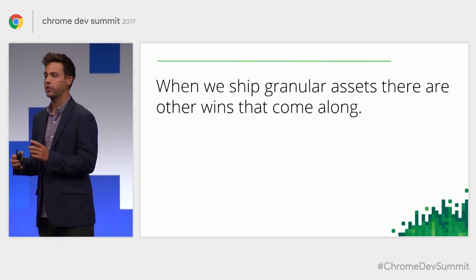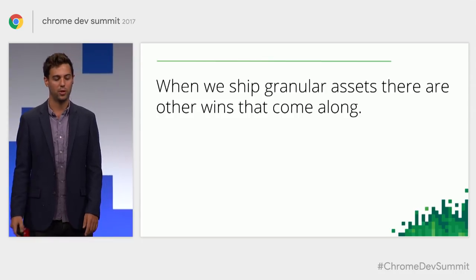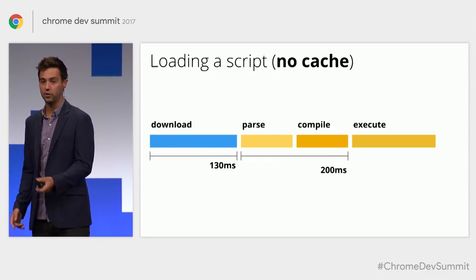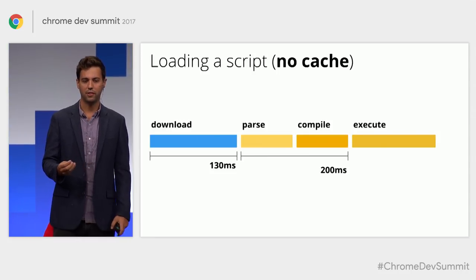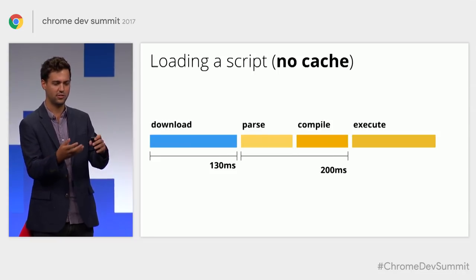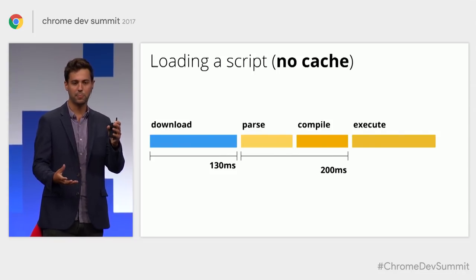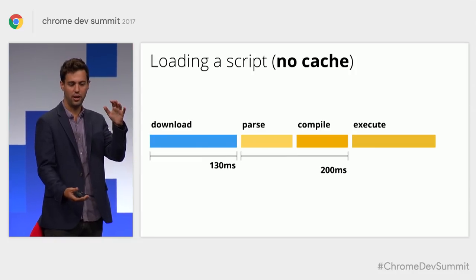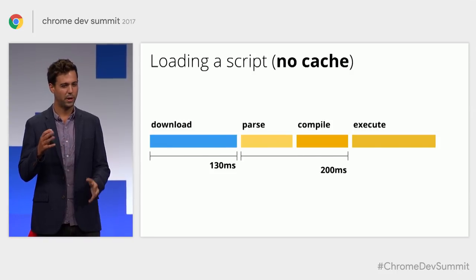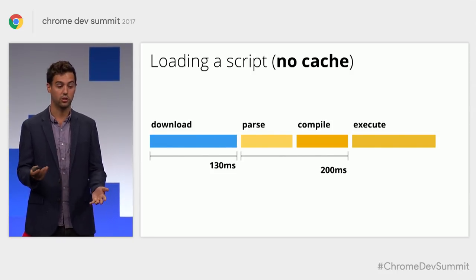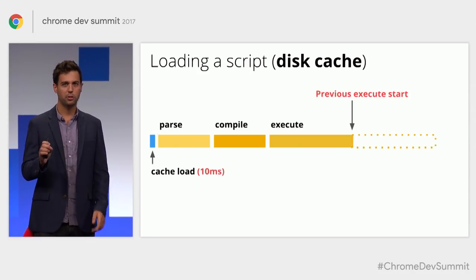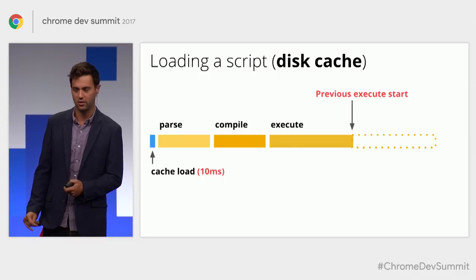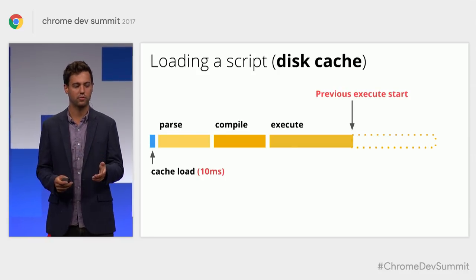When we ship granular assets, there are interesting wins. Loading a JavaScript file means first downloading it from the network, then a parse phase where the engine takes the textual representation and turns it into a shape the browser can understand, then a compile phase where it produces a machine-specific binary format. With granular assets, our initial download is saved on repeat loads because we have that asset locally cached, giving us significant savings already.